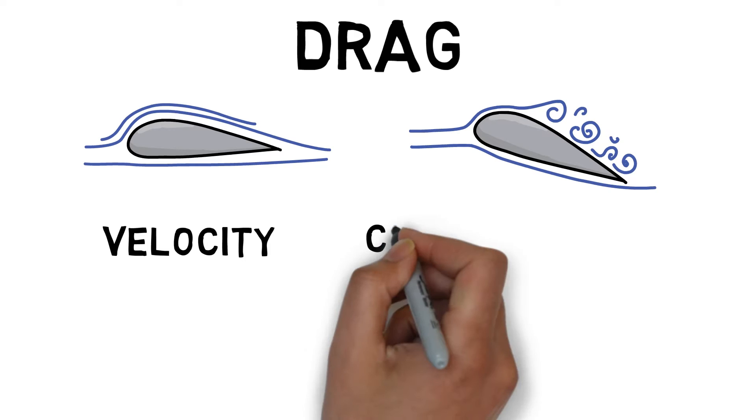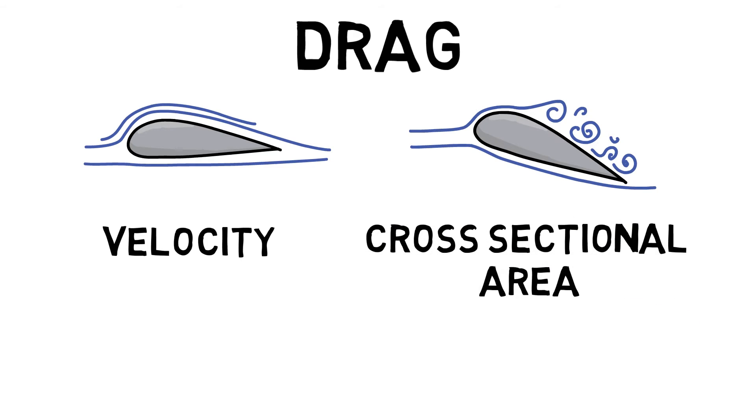Cross sectional area: the greater the cross sectional area, the greater the resistance. Shape: pointy objects cut through air resistance easier than flat objects. And surface: a rough surface will create more resistance than a smooth surface.